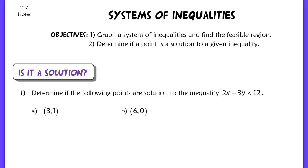This lesson is for section 11.7, Solving Systems of Inequalities. Our two objectives today are going to be to graph a system of inequalities and find the feasible region — a vocabulary term from probably last year meaning the possible solutions for your system of inequalities. The second objective is to determine if a point is a solution to a given inequality.